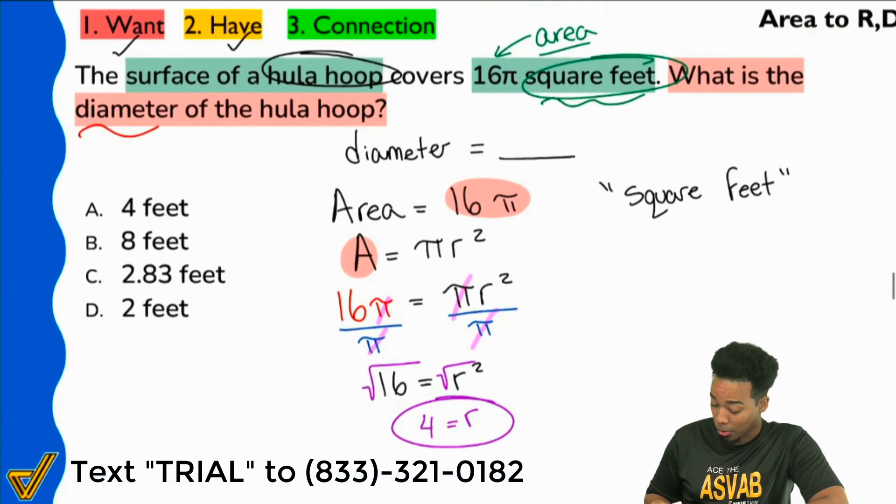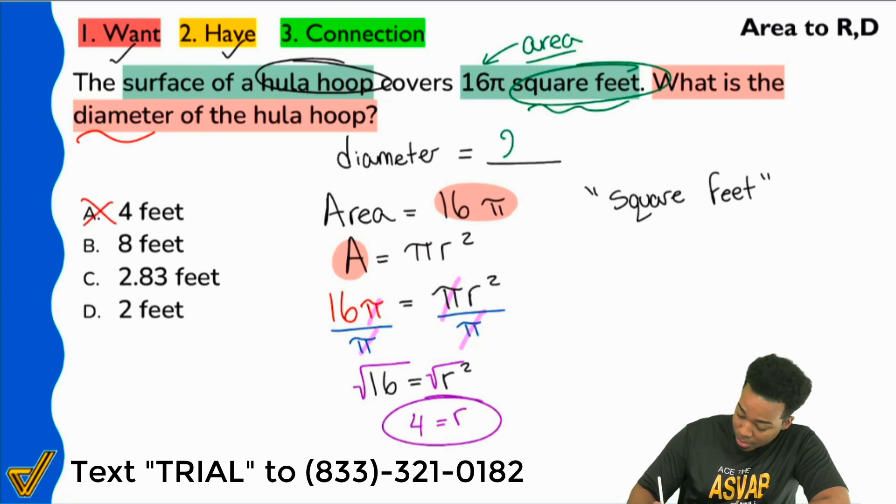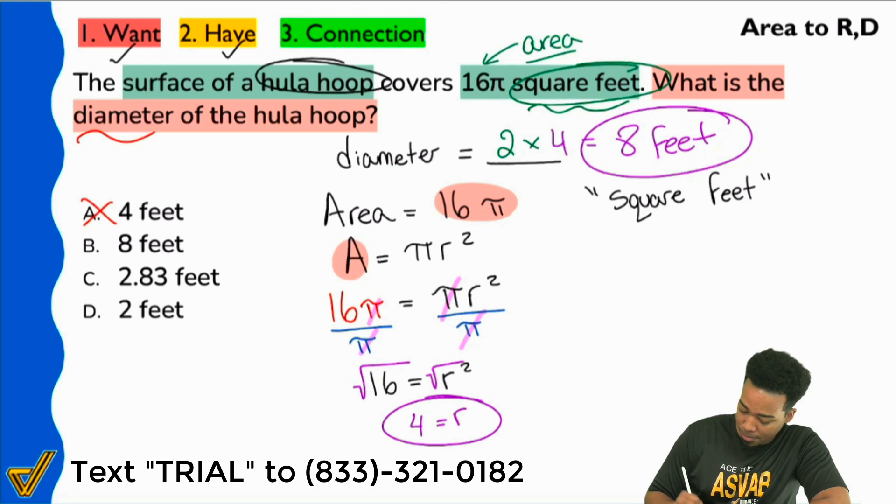So don't get confused though. Don't get tricked into thinking that A is the answer because it is not. It is not the answer. The answer is going to be B because remember the diameter equals double that radius. And 2 times 4 is 8. So we have 8 feet for the diameter.